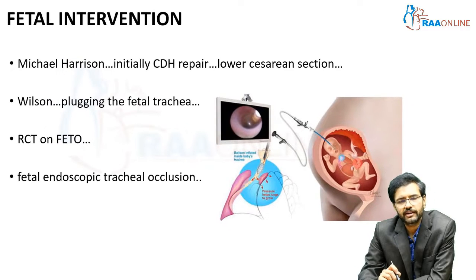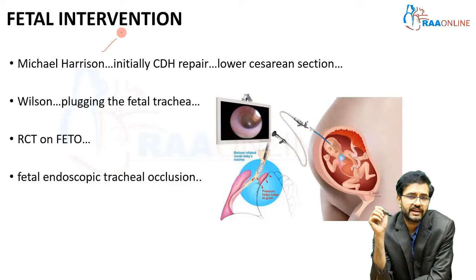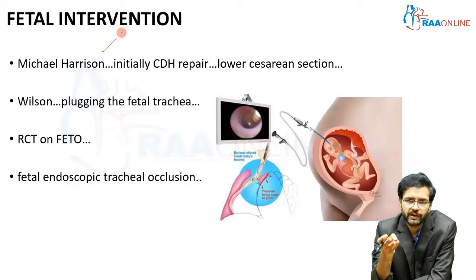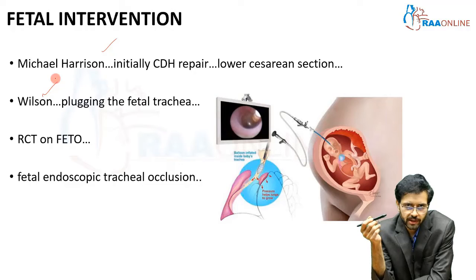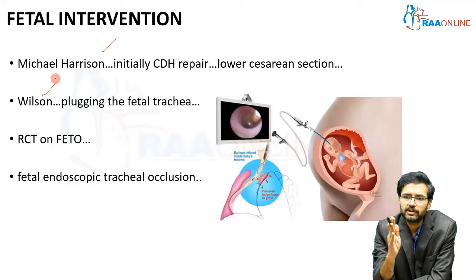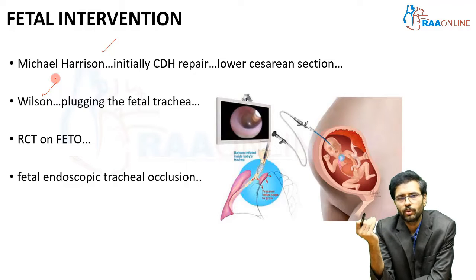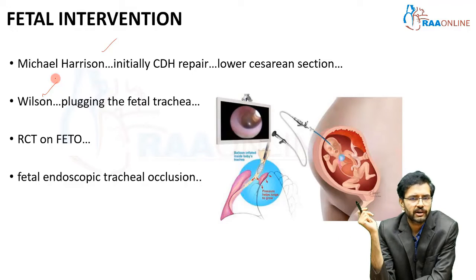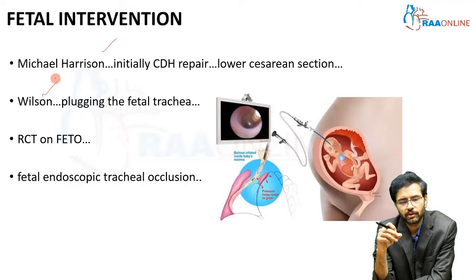Regarding fetal intervention, Michael Harrison initially performed CDH repair via open fetal surgery using a lower cesarean section. However, the risk of fetal distress and loss of pregnancy was very high, so this was abandoned. Dr. Wilson then tried plugging the fetal trachea, reasoning that stimulating lung growth was the key factor in determining prognosis. Occluding the trachea was found to promote lung development, potentially reducing the effects of CDH and increasing survival rates.